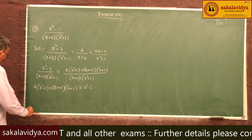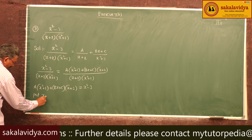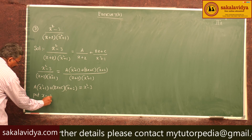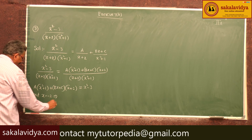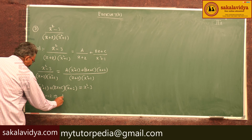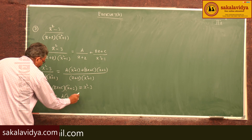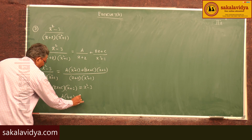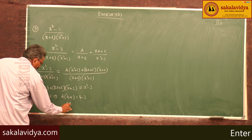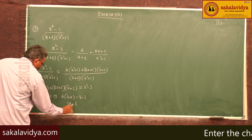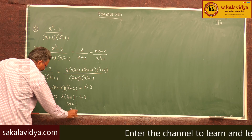Now put x = -2. This gives A(4+1) = 4 - 3, so 5A = 1, therefore A = 1/5.